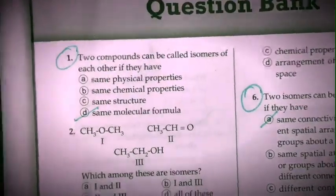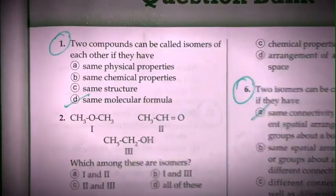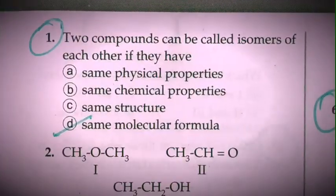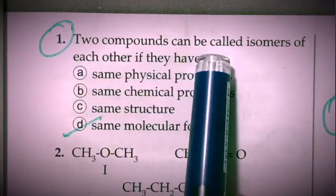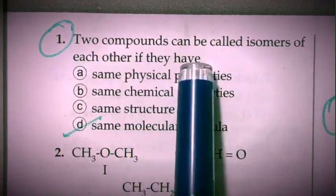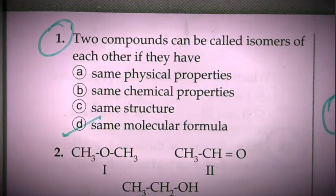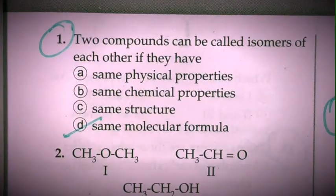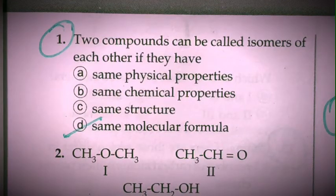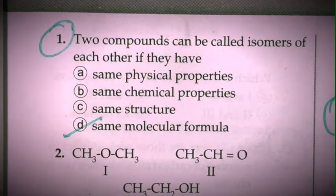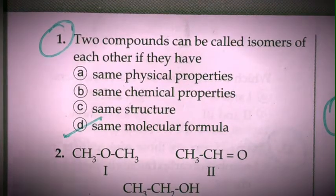The first question is: two compounds can be called isomers of each other if they have... As we know, isomers are different compounds having the same molecular formula. Their properties may be different — their chemical properties, physical properties — all may be different, but their molecular formula will be the same.